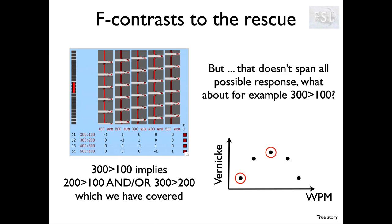This F-test covers everything we need: four t-contrasts across adjacent pairs cover all possible response shapes of interest. It looks for any instance where changing the word presentation rate changes the activation level. If all conditions produce exactly the same activation, the F-test shows nothing — for that you'd use a simple mean t-contrast across all levels. But in a parametric design, the question we're interested in is whether changing the level of the stimulus changes the activation, and this F-contrast is a great way to detect that.